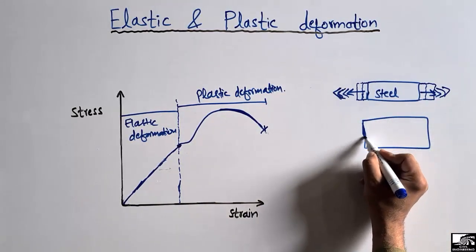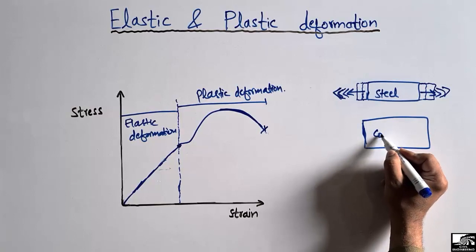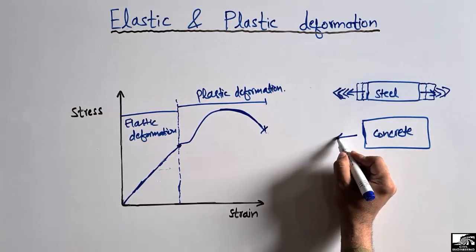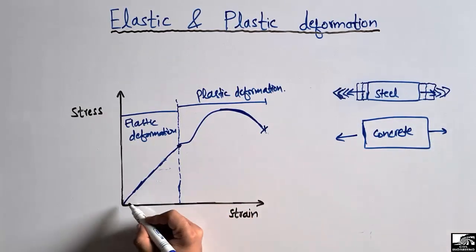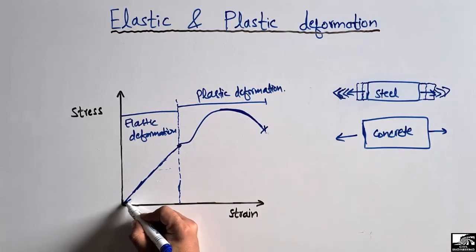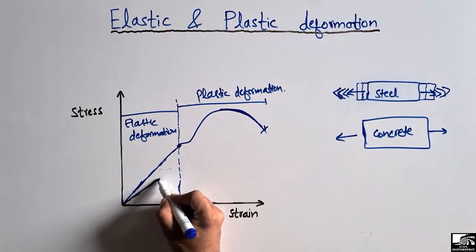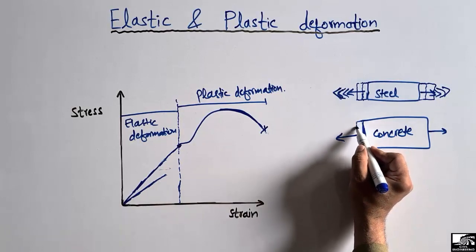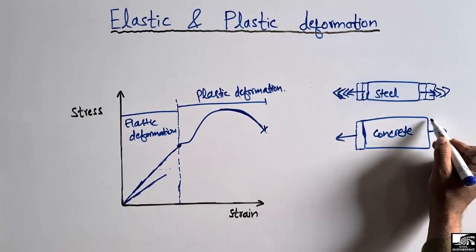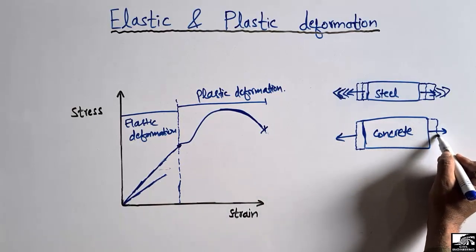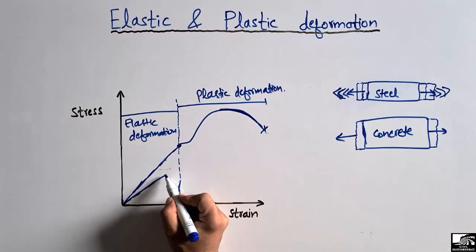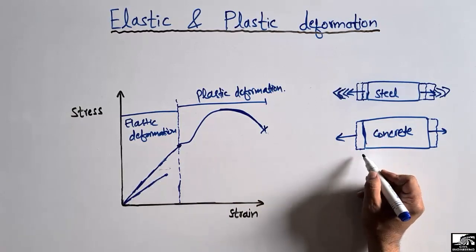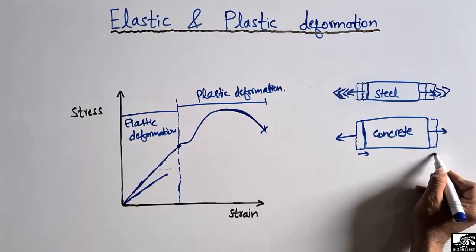Similarly, if we take the example of concrete — if I apply tension on both sides of the concrete, it will show some increase in stress and strain and expand. Up to a certain point, if I remove the load, the concrete material will again come back to its original position. This point represents the elastic deformation for concrete.